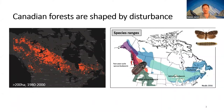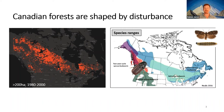Mountain pine beetle also warrants mention — it's in the western US and western Canada, moving eastward through Alberta and causing large changes to forest landscape structure in recent decades.